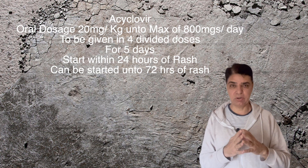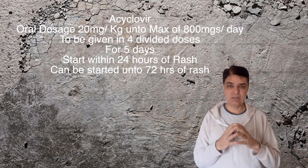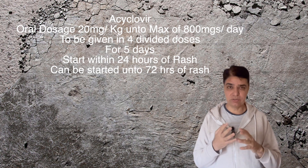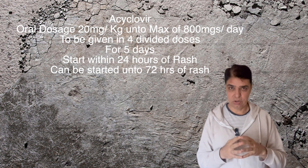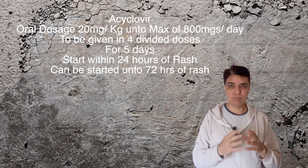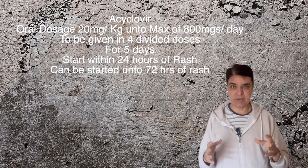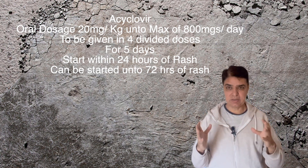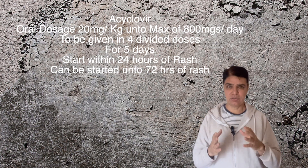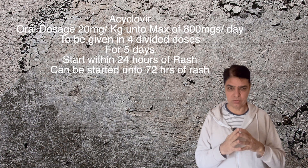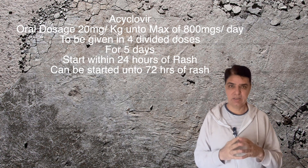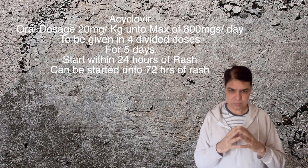The usual oral therapy is 20 milligrams per kilogram of body weight, to a maximum of 800 milligrams. You should never exceed 800 milligrams. This dose is divided into four doses — for example, if the maximum dose is 800mg, you give 200mg QDS — and it should be given for a minimum of five days.